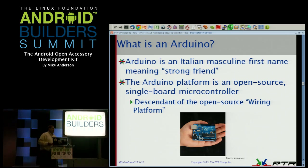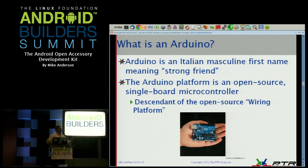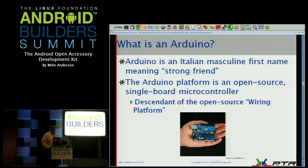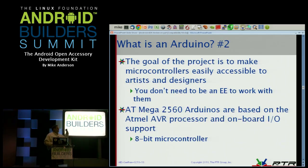A lot of computer scientists typically like the Arduinos because it's something we can easily work with. Many of us, even with a degree in computer science, didn't pay much attention in those electrical engineering classes. So unless you're a ham radio operator or somebody who's forced to work with electronics, most computer scientists don't know anything about LEDs and resistors and which end of the LED is the cathode and which end is the anode. This environment gives us all of the ecosystem we need to be successful in creating relatively complex circuits.